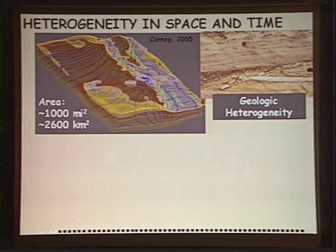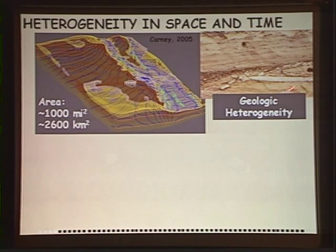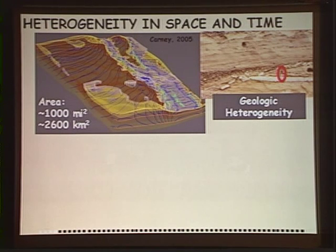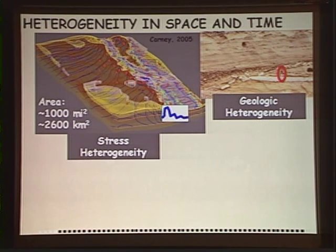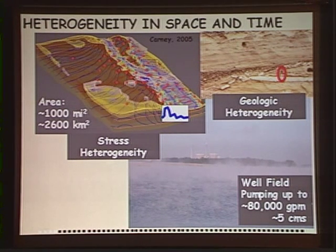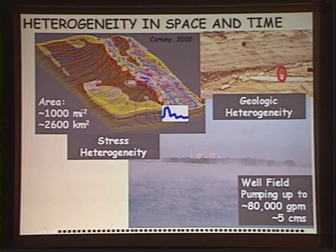There's a lot of heterogeneity in space and time. For example, the site in Nebraska covers a thousand square miles. And if we look at a cross section of material on a road cut — here's a rock hammer for scale — we see that there's a lot of heterogeneity in that system in space, and also in time because the irrigation wells are turning on and off all the time, the river levels are going up and down, and flow rates are changing. The challenge here is to manage a very large well field around that reservoir that pumps up to 80,000 gallons a minute, and optimize that management to minimize the impact on the surrounding farmers' irrigation wells and to determine which farmers are impacted so they can be compensated.